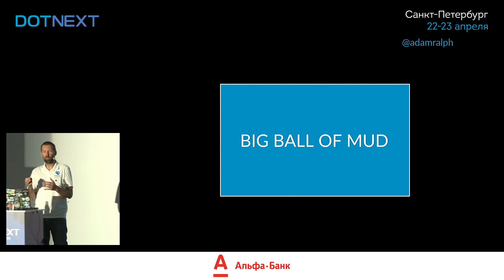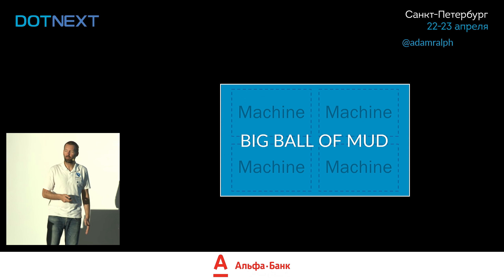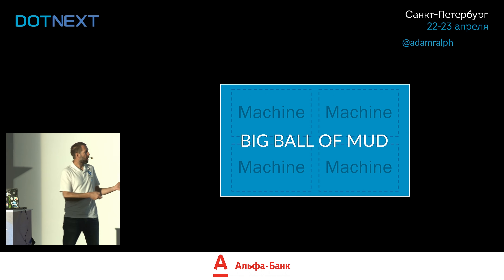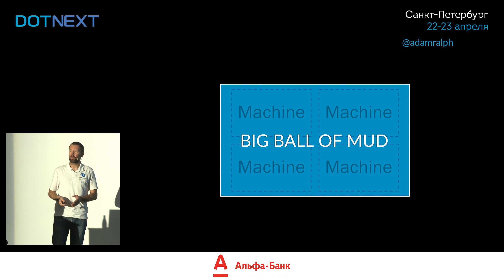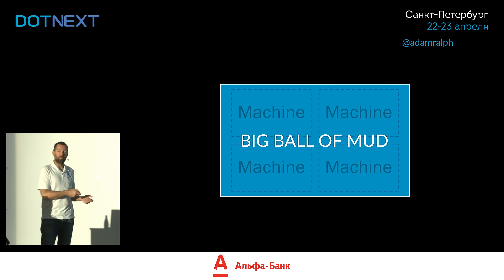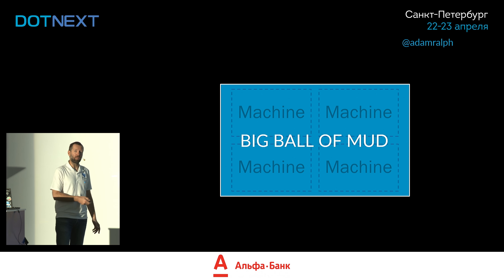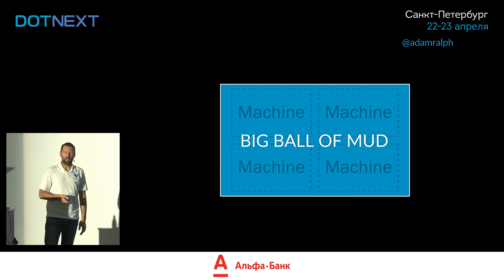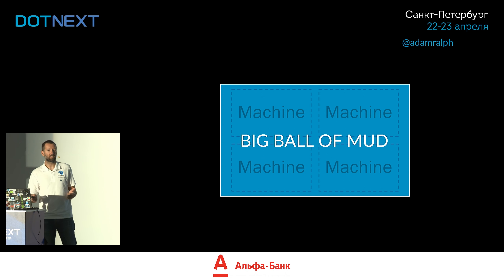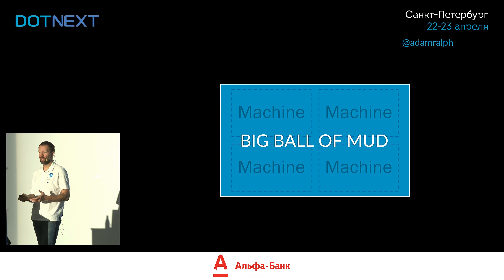We never set out to build this, but over time things creep up on you and you end up back in the big ball of mud. Only this time it's different, because you split things up into services deployed onto different machines. You can no longer roll out one thing — you might have to roll out all four at a time because they're so highly coupled. They're talking to each other over the network, which is a lot less efficient than memory class-to-class calls. You can sometimes end up in a worse place than you started.